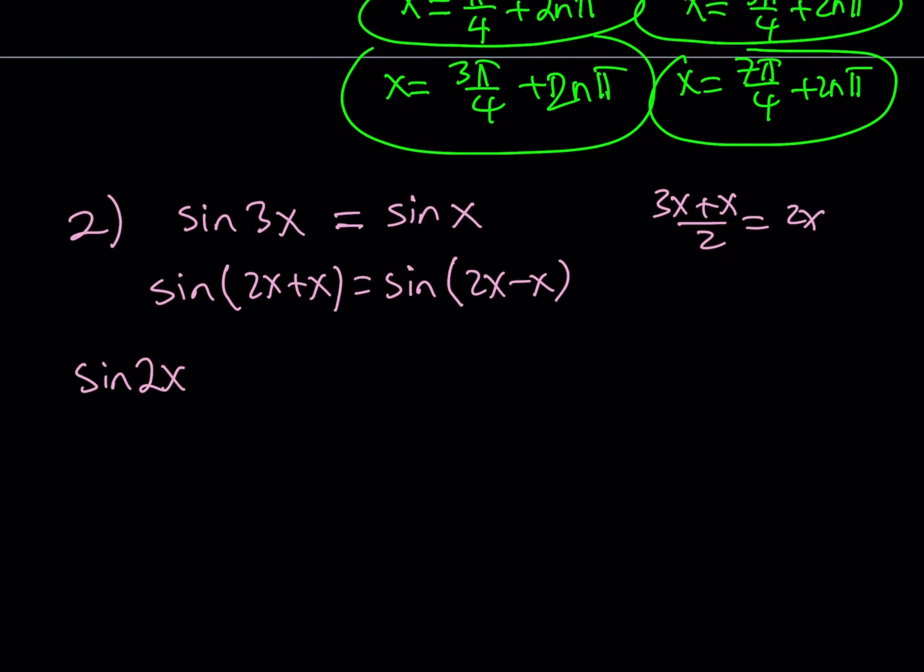Sine 2x, cosine x, plus sine x, cosine of 2x. And then on the right-hand side, same thing with the minus sign. Sine 2x, cosine x minus sine x, cosine 2x.